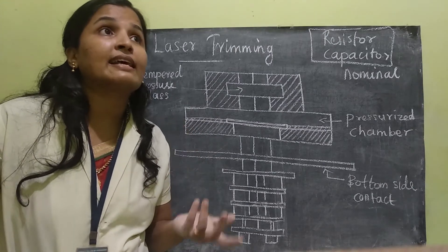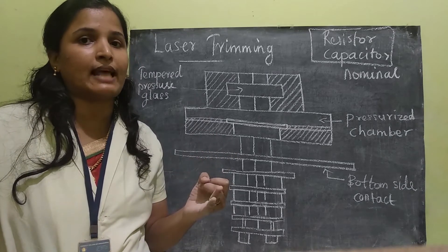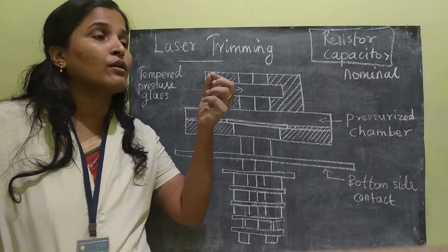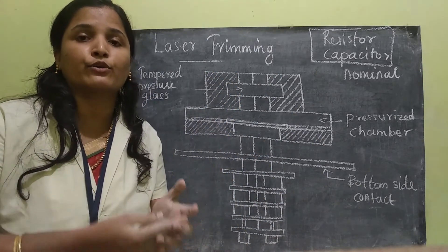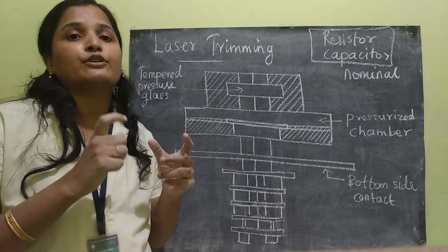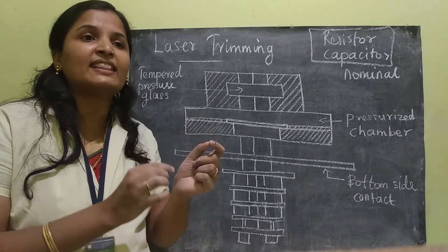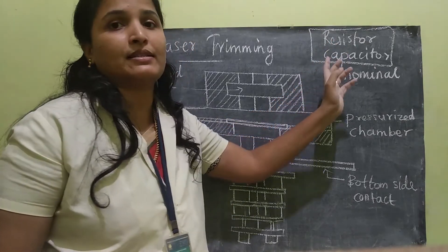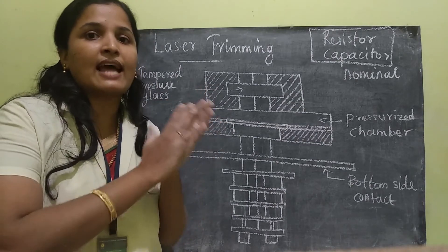Laser trimming has two types: active and passive. Active means everything in the circuit — like frequency, amplitude, all things — will be considered and controlled. Passive trimming means only the required thing, either resistance or capacitance, any one thing can be focused on and achieved.